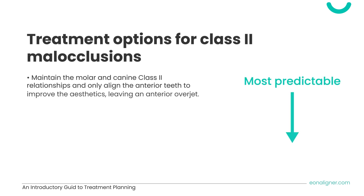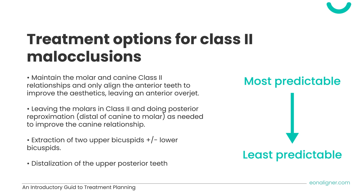Class 2 malocclusion can be treated in several ways using EON aligners. The four most common approaches, listed according to predictability, are: first, maintaining the class 2 malocclusion and focusing on aesthetic alignment, leaving an anterior overjet when the patient is not concerned about correcting it. Second, leaving the molars in class 2 and performing posterior IPR distal of canine to molar, approximating as needed to improve the canine relationship. Third, extraction of upper bicuspids and/or lower bicuspids — consider using auxiliaries to aid movements, and note that due to the long travel distance, fixed appliances may be required towards the end of treatment.